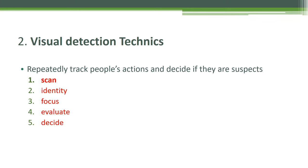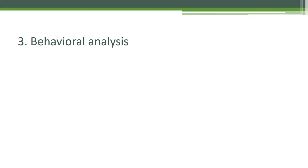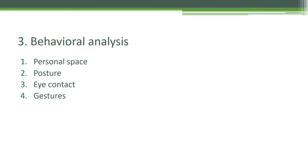Skill three is behavioral analysis. We can determine from human behavior whether someone is going to be involved in suspicious or threatening activities. From human behavior we can find whether they present a safety and security threat to the organization. The four areas are: number one, personal space; number two, posture; number three, eye contact; number four, gesture and threat profiling.